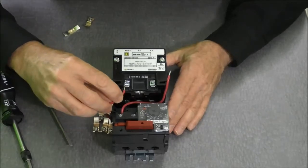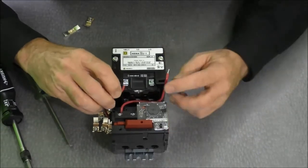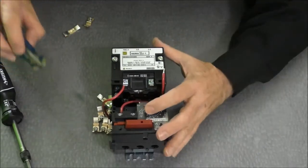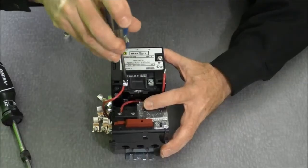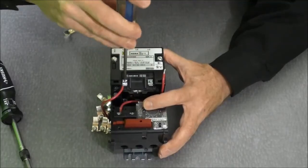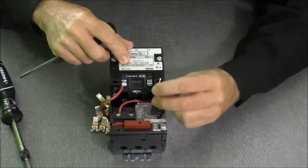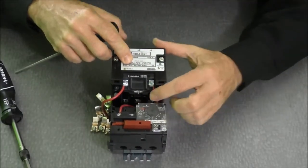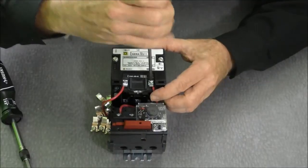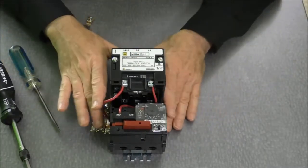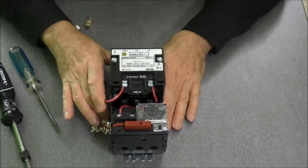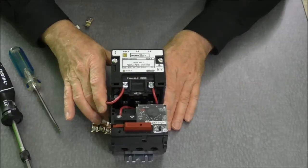The last step is to put the coil wires back onto the A1 and A2 terminals. That's six to nine inch pounds for those terminals as well. So now we have a used starter with brand new contacts in it.